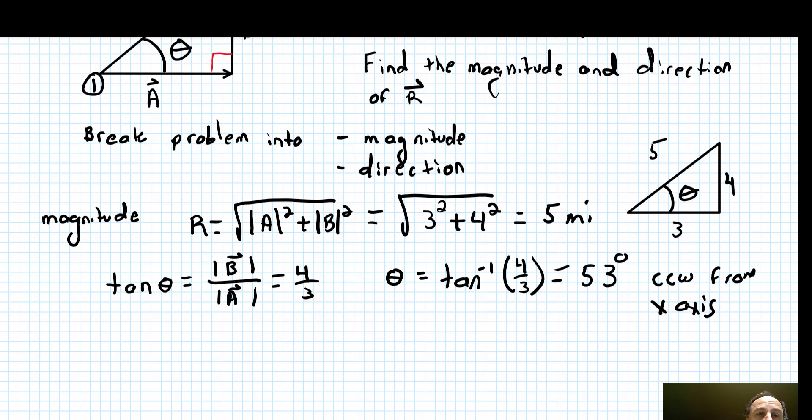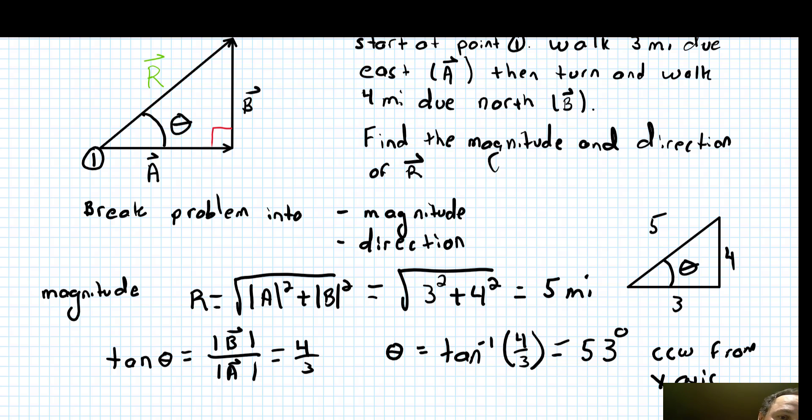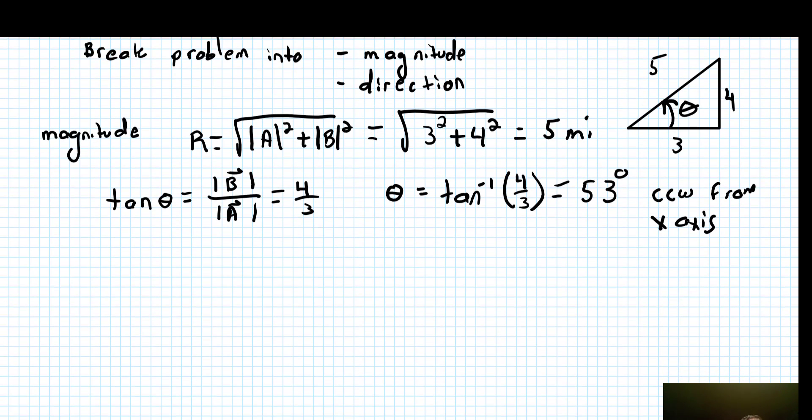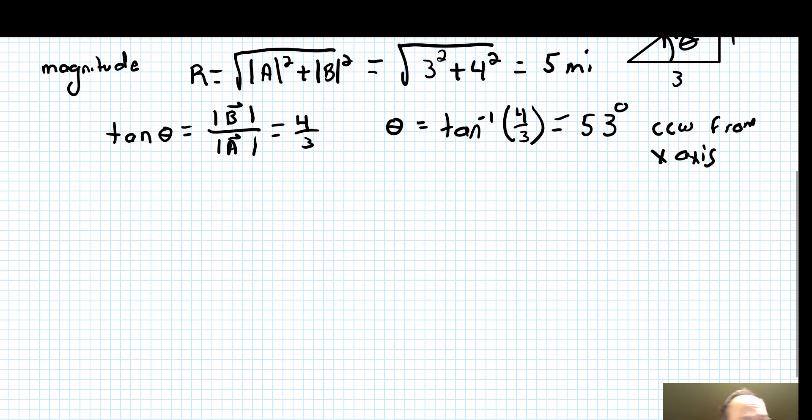That's the typical convention. Sometimes they do it differently, but they should say it if they do, and you should say it if you do. So the complete answer would be 5 miles at 53 degrees. All right, so now let's jump into section 3.3, components of a vector.